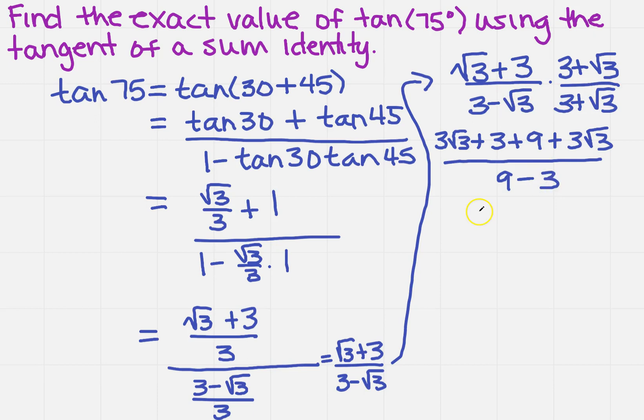So now I can combine like terms. And I've got 6 square root of 3 on top plus 12 over 6. Well, they all have a 6 in common. So I get the square root of 3 plus 2. Now remember, if you write that in standard form, it's going to have to be 2 plus the square root of 3. And that is your exact value.